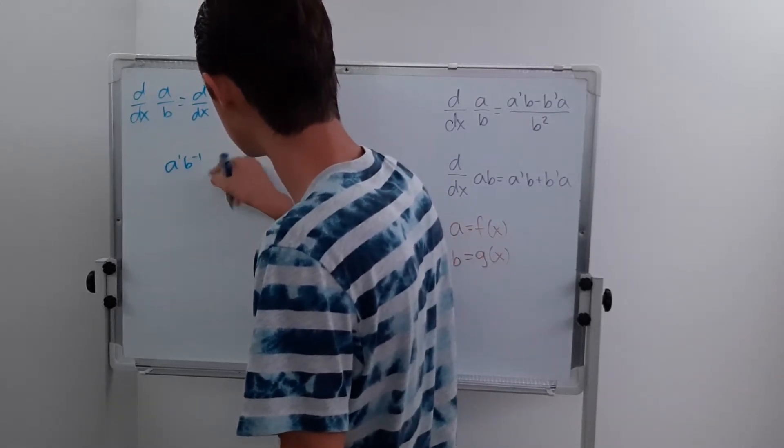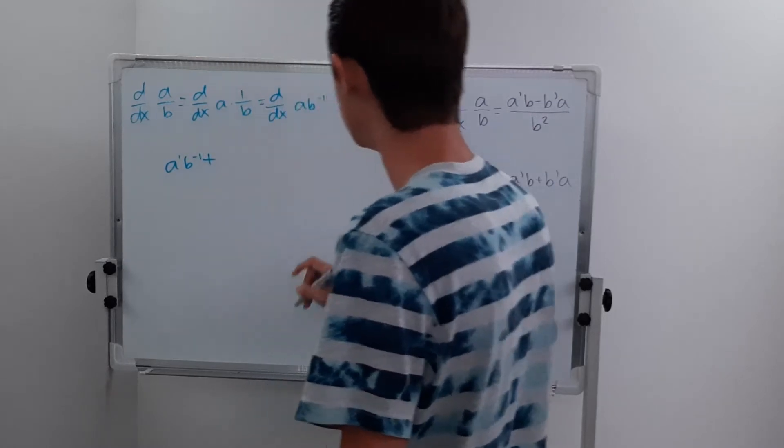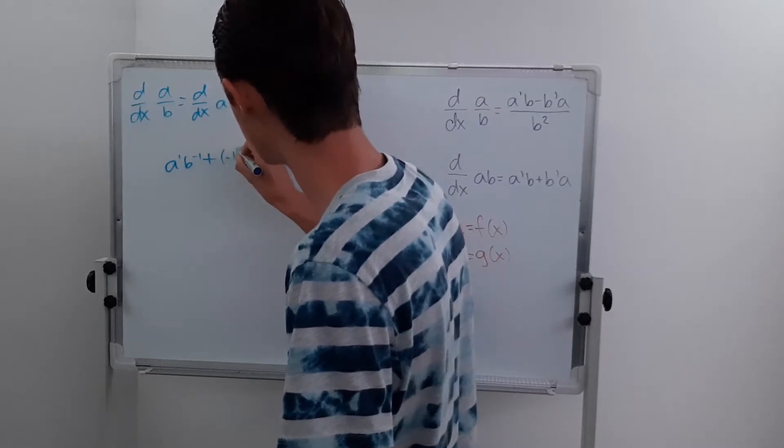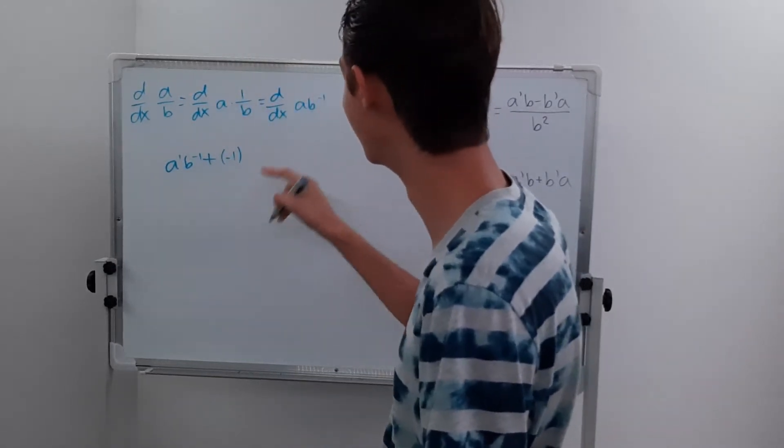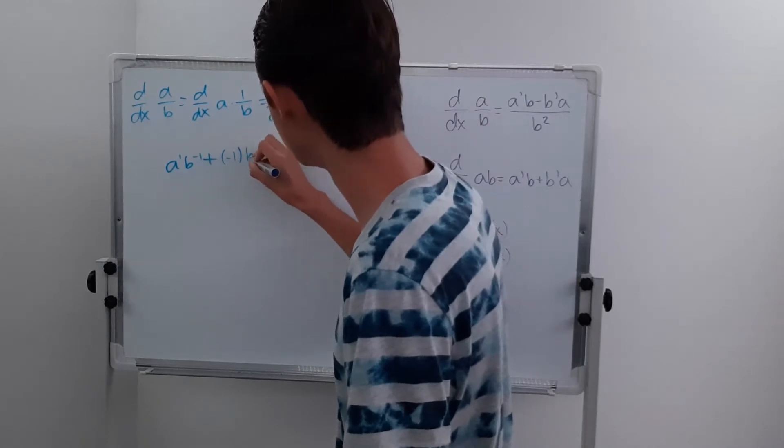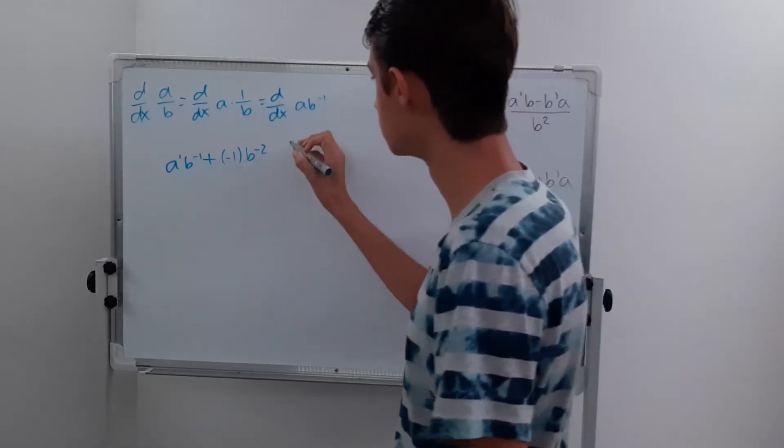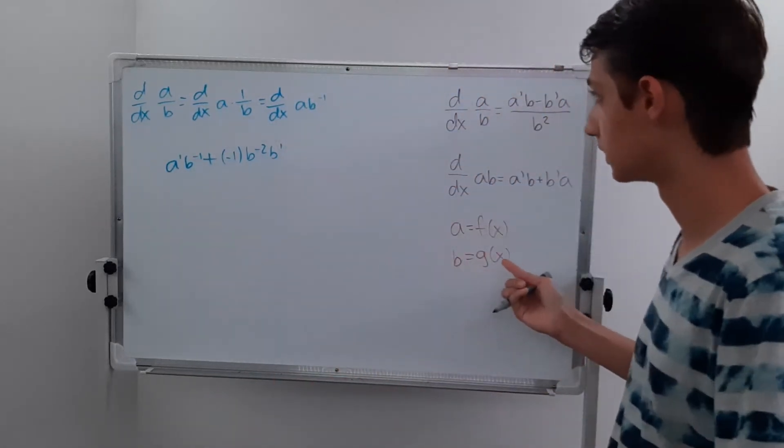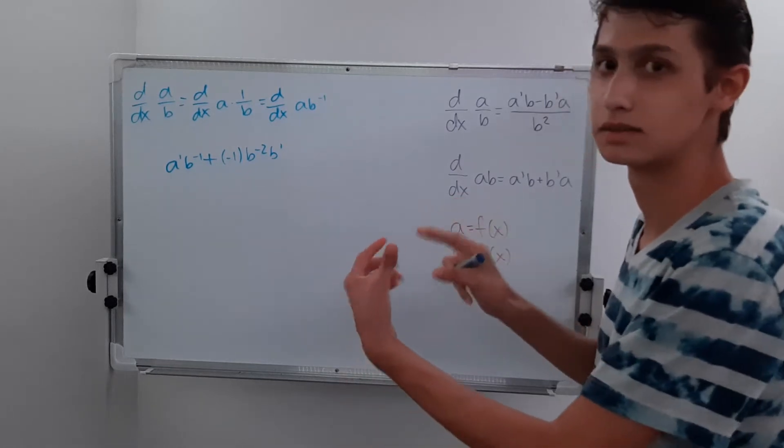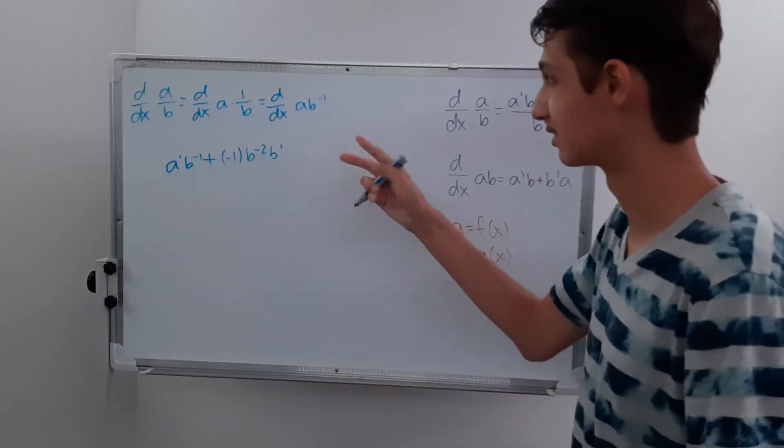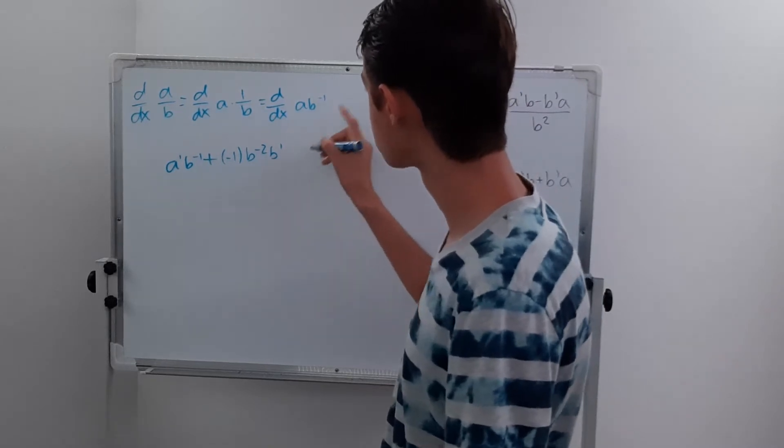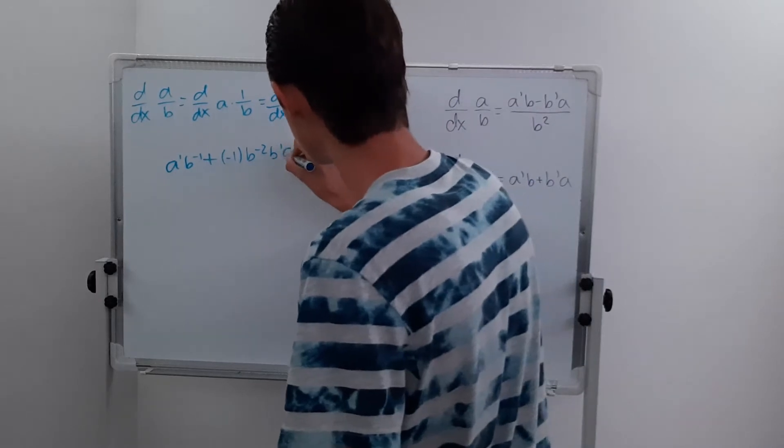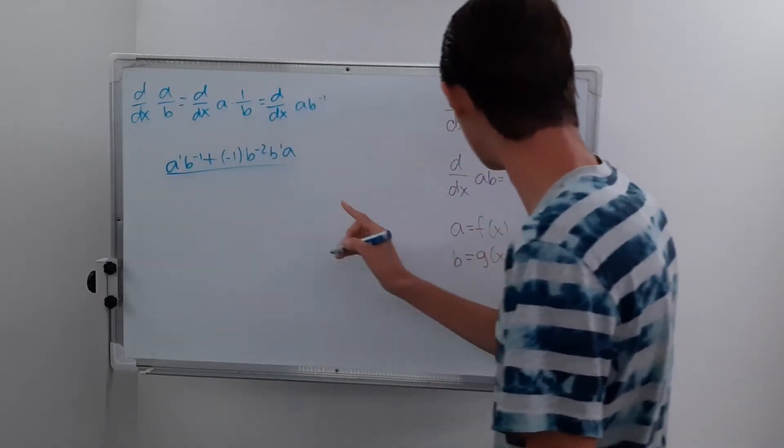Then we add a, we add b prime, which we have to use the chain rule for. We put the negative 1 to the front, and then we have this b to the negative 2. And then we have to have this b prime. The reason why we have the b prime is because b is a function of x, it's our g of x. And so it's like g of x to the negative 1 power, just rewritten. So b prime, and then we have to multiply by a, which is simply just a.